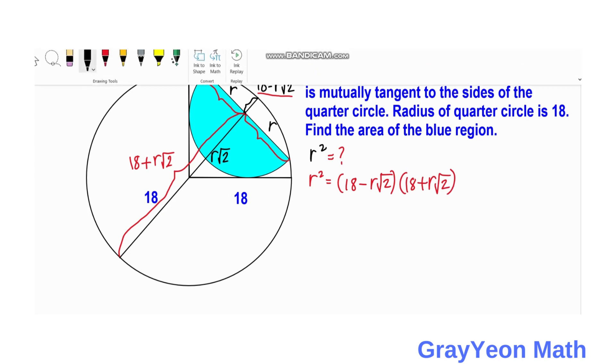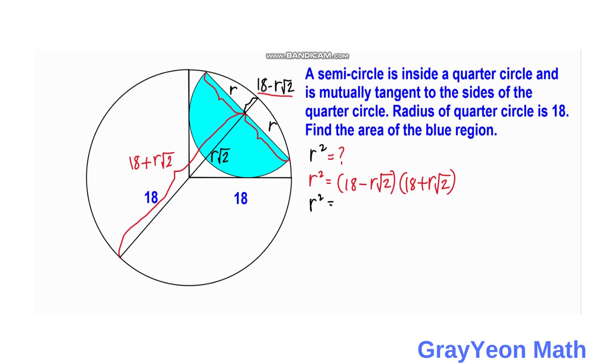If we simplify further, we have R square is equal to, since this is the difference of two squares, it will become 324 minus R square times 2, and that would be 2R square. So if you put this negative 2R square to the left hand side, then you will have 3R square is equal to 324. And if we divide both sides by 3, then therefore we have R square is equal to 108.